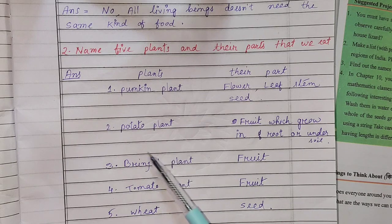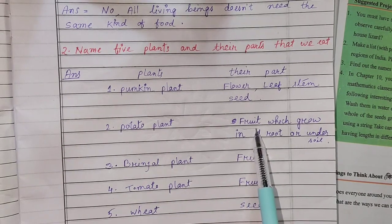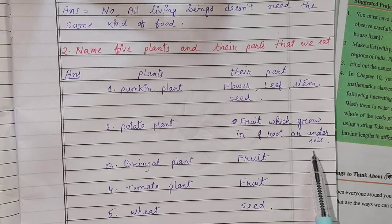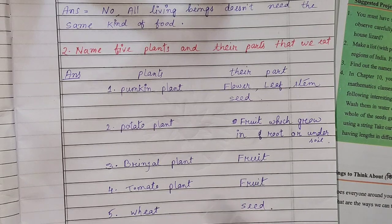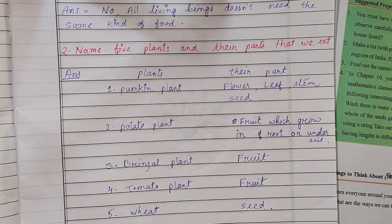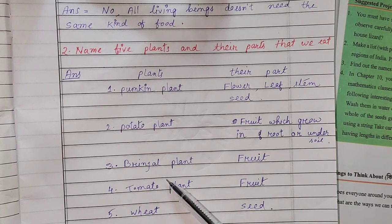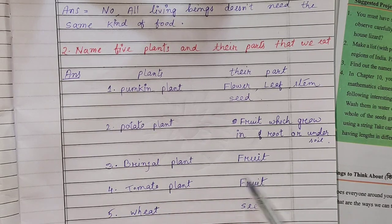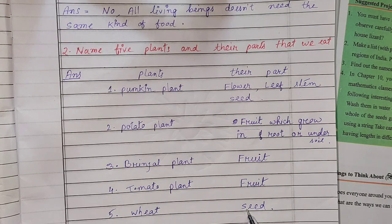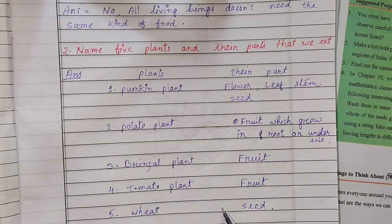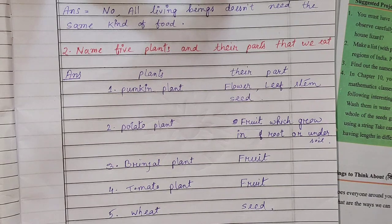The potato plant — the part we eat is the fruit, which grows in the root or under the soil. Next, the brinjal plant — fruit. The tomato plant — fruit. And we also eat the seed, root, and fruit of various plants.